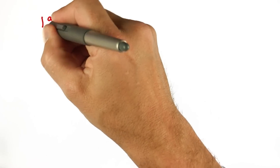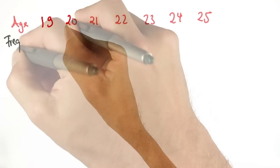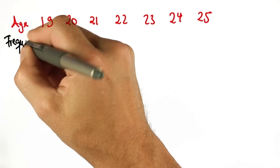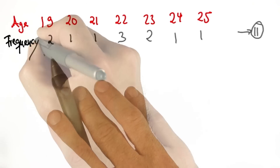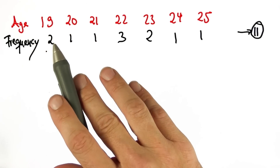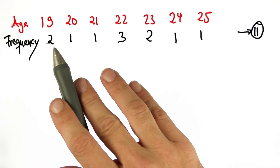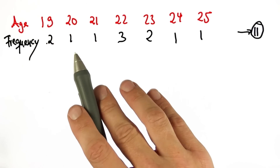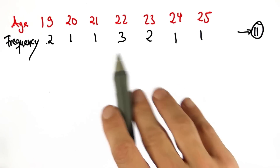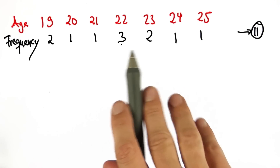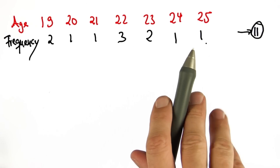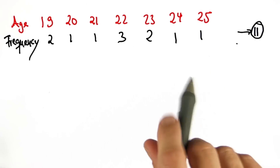So here's our age distribution again, and they come with certain frequencies. Two of the people in the database are 19 years old, one is 20, one is 21, three are 22, and so on. There are 11 individuals.